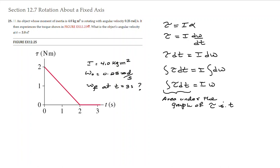The area under the graph of torque versus time from zero to three seconds is equal to I·ω. This area under the graph is the area of a triangle, so it is one-half times base times height. One side of the triangle is 2 seconds and the other side is 2 newton-meters.